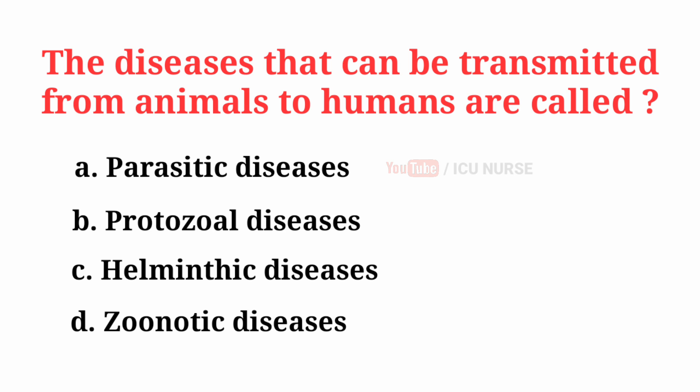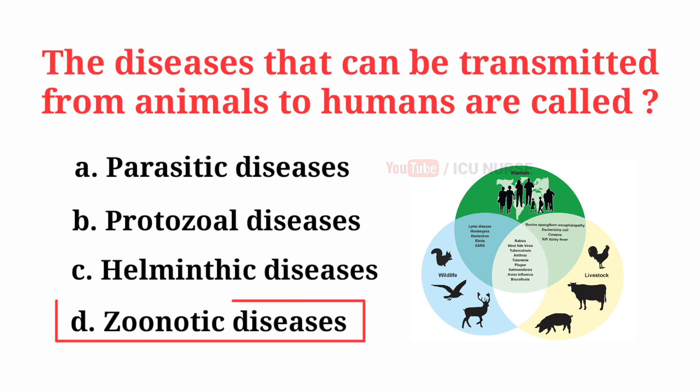The diseases that can be transmitted from animals to humans are called... The correct answer is D, Zoonotic diseases.